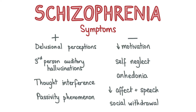Schizophrenia is diagnosed when one or more first-rank symptoms are present. These include delusional perceptions, third-person auditory hallucinations usually as a running commentary, thought interference including thought withdrawal, insertion and/or broadcast, and passivity phenomenon where the patient feels parts of their body or mind are being controlled by an outside force. Schizophrenia also causes negative symptoms like reduced motivation, self-neglect, anhedonia, reduced affect and speech, and social withdrawal. In severe cases, some patients may exhibit catatonic behaviour.